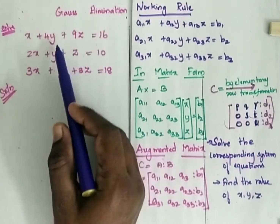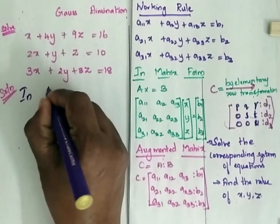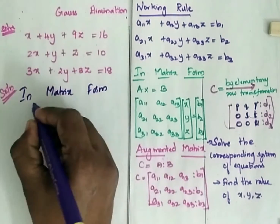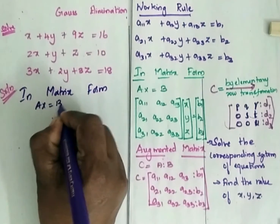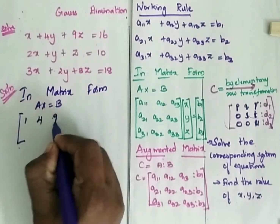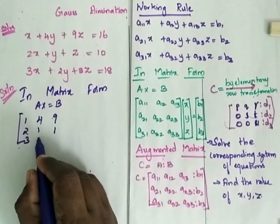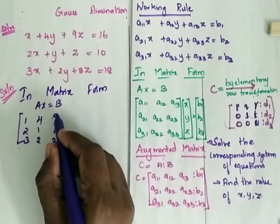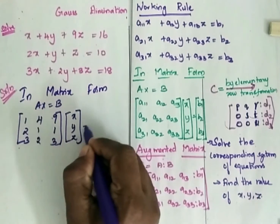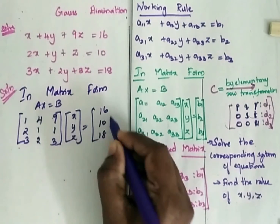Now let us write this equation to find the solution in matrix form. In matrix form, Ax is equal to B. So the matrix A is: 1, 4, 9 in the first row; 2, 1, 1 in the second row; and 3, 2, 3 in the third row. The vector x is x, y, z and B is 16, 10, 18.